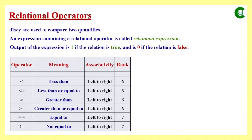Here is a list of relational operators that C supports. We have six such operators. In the first column, we have their symbols, and in the second column, we have their meaning: less than, less than or equal to, greater than, greater than or equal to, equal to, and not equal to. These are operators we are already familiar with from mathematics. In the third column, we have the associativity, and in the fourth column, we have the rank.